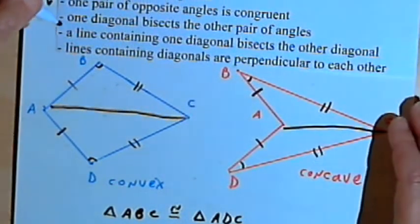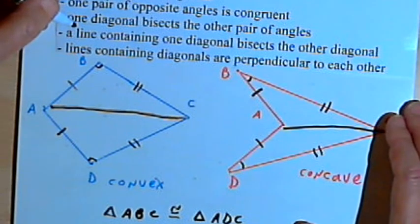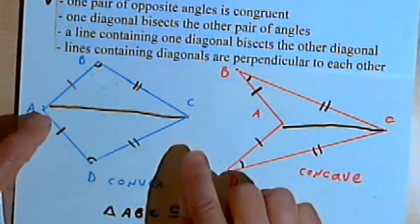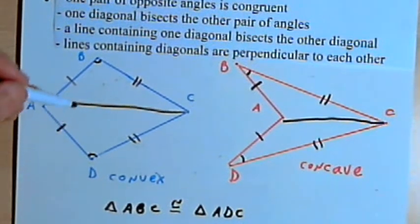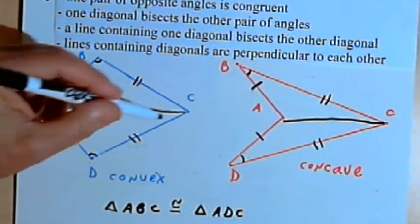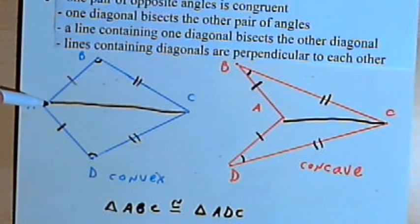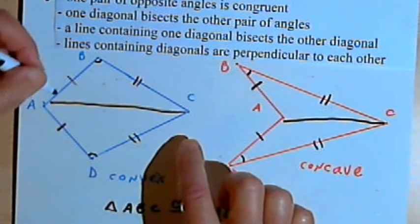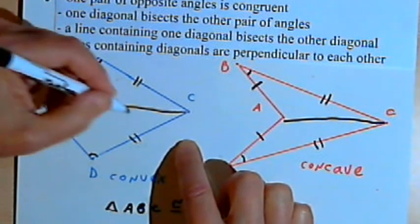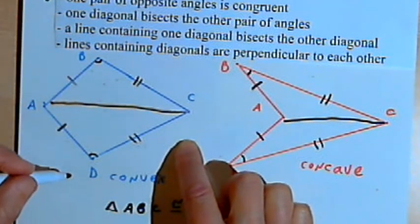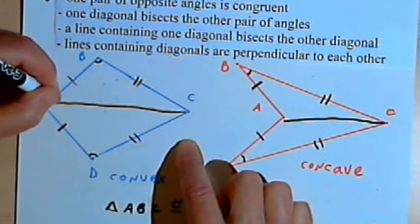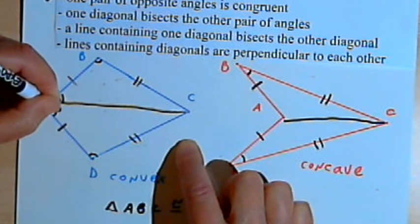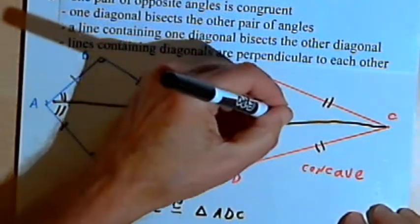Then the next property says that one diagonal bisects the other pair of angles. The other pair of angles is AC. Looking again at the two triangles that we've made, by drawing diagonal AC, we can see that angle BAC is congruent with angle DAC. So we've bisected angle A, and we've done that in both cases.